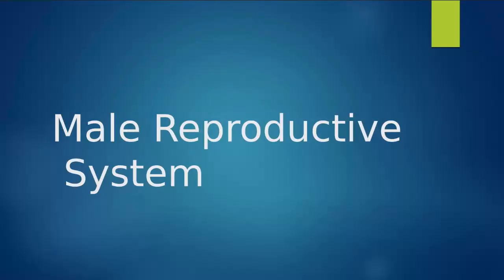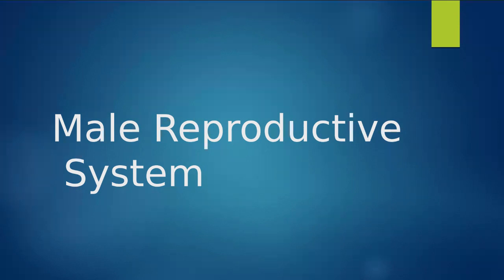Hi everyone. We are moving on to our scrotum module, also known as our male reproductive system. Within this PowerPoint, we are going to be talking about all of the normal male reproductive anatomy. This mainly is going to include the scrotum and the scrotal contents, but we're also going to talk about the prostate and how all of these organs are so closely related and how they all kind of work together.